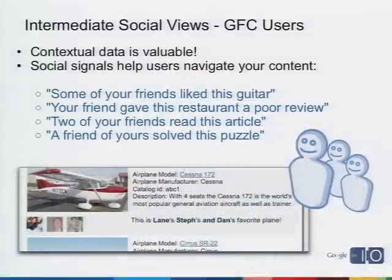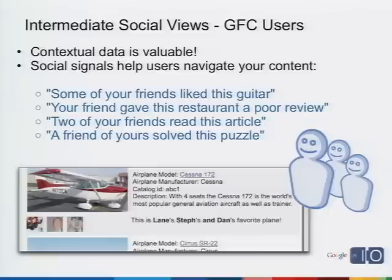Let's talk about some more advanced types of views. Data in the context of the site is actually really valuable. When showing a list of planes, showing which friends like that plane next to each entry is a nice piece of functionality that helps users browsing your site discover content that might be more interesting. On the Plane Crazy site, the Cessna 172 shows 'three of my friends like this plane' — so I'm more inclined to click in and find out more. You can think about how this applies to other sites: a guitar site where friends own or like certain guitars, a restaurant review site where friends gave a restaurant a poor review — the social signals help users decide what content is important.